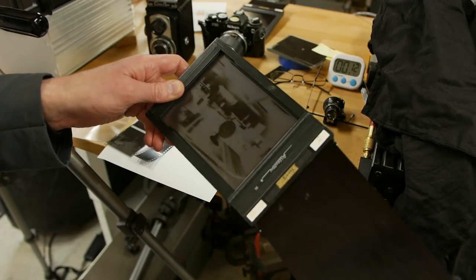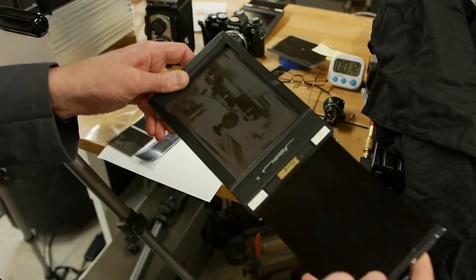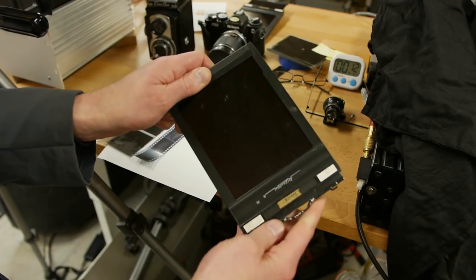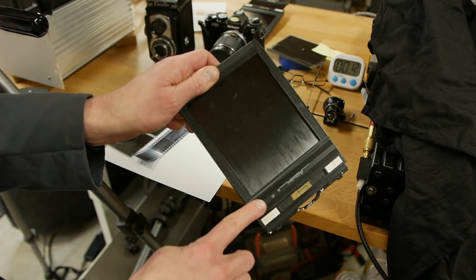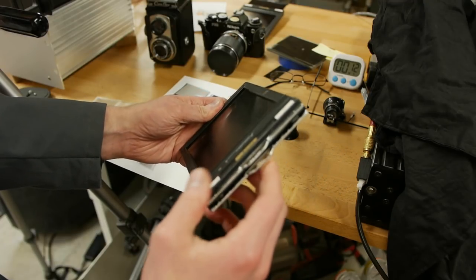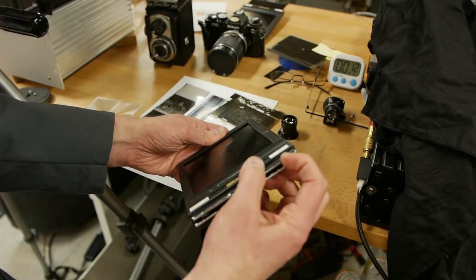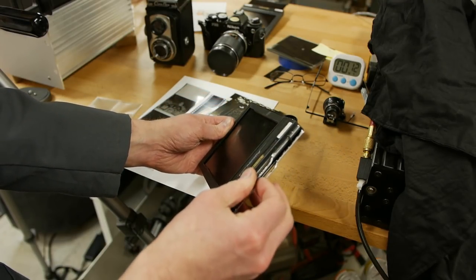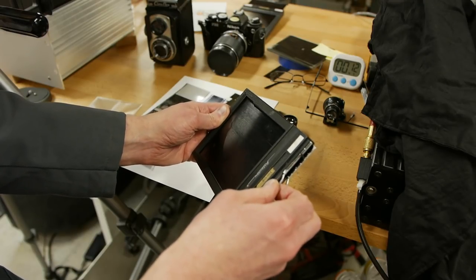And then you do your exposure and remember to put the dark slide back in. And there's also a felt seal over here, so no light can get in from there. And then you're safe again. You can pull this whole thing back out of the camera.